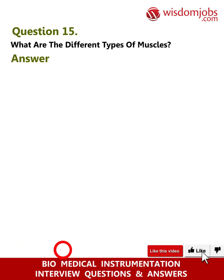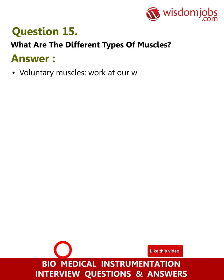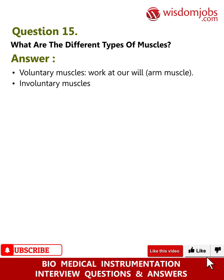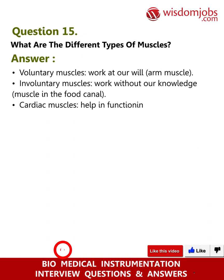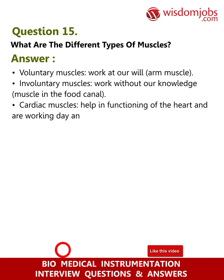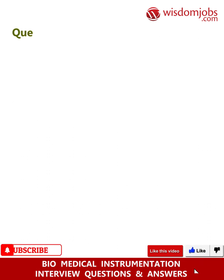Question 15: What are the different types of muscles? Answer: Voluntary muscles work at our will, e.g., skeletal muscle. Involuntary muscles work without our knowledge, e.g., muscle in the food canal. Cardiac muscles help in functioning of the heart and work day and night without fatigue.